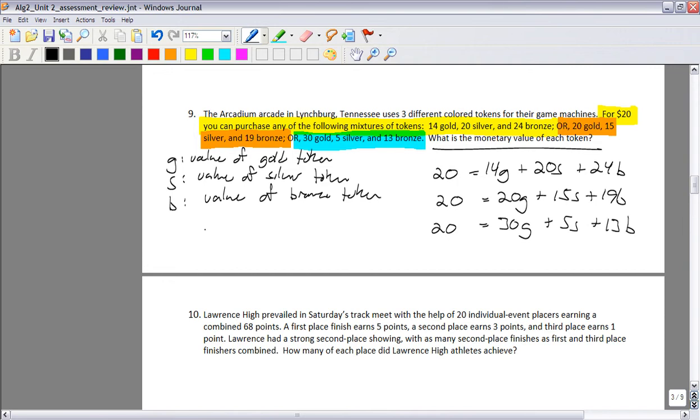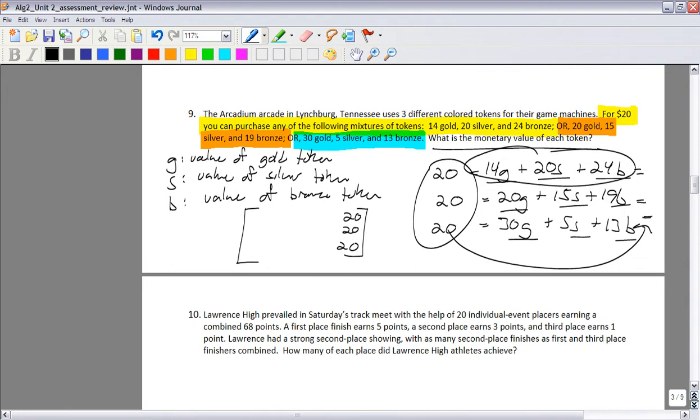So we've talked before about putting this into a matrix. So what that matrix would look like, remember the answers always go on the far right. So you've got, everything's lined up, gold, silver, bronze, gold, silver, bronze, gold, silver, bronze. I'm going to move these guys over to the other side. So the final spot here will be 20, 20, 20. Then I'll go 14, 20, 24. 20, 15, 19. And then 30, 5, and 30, 5, and 13.